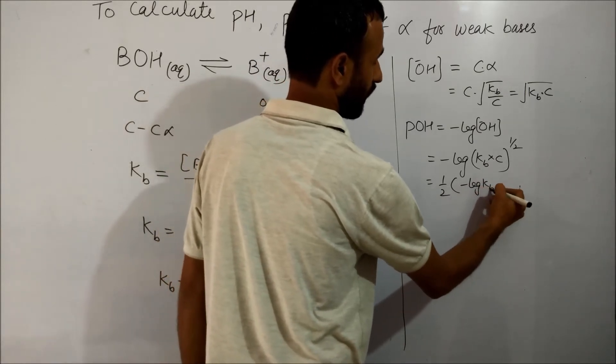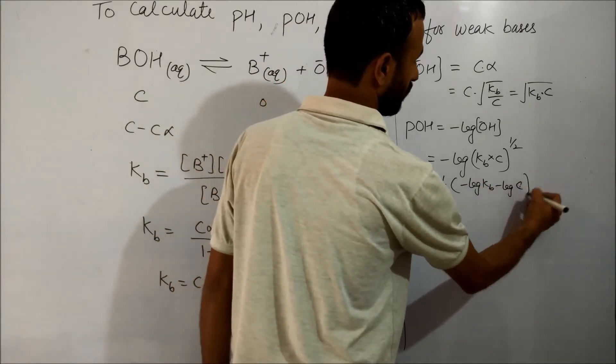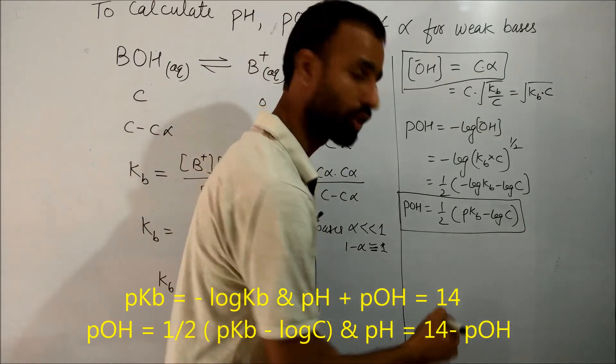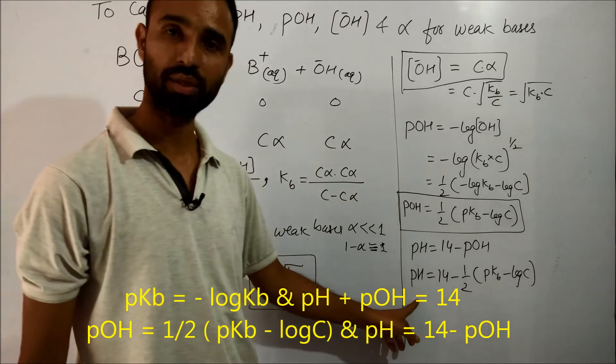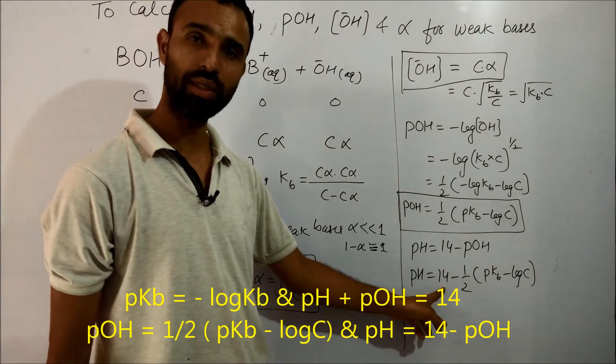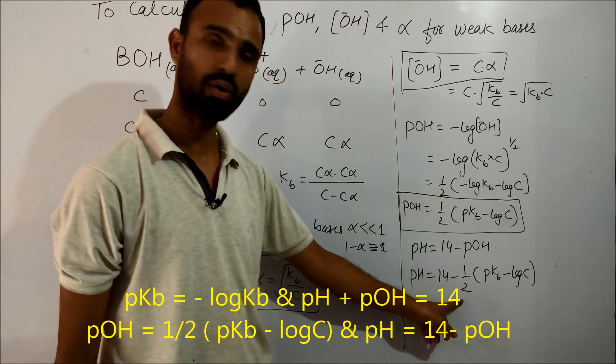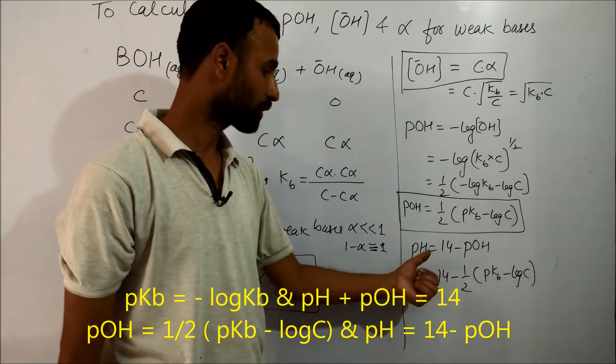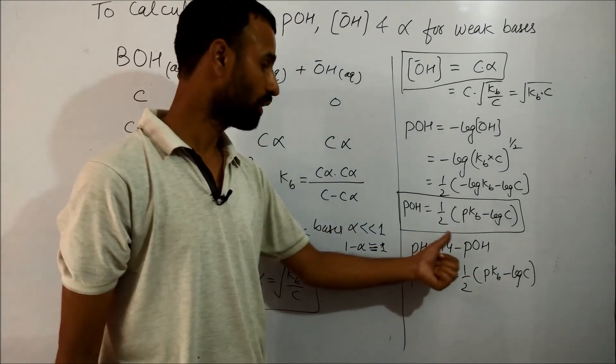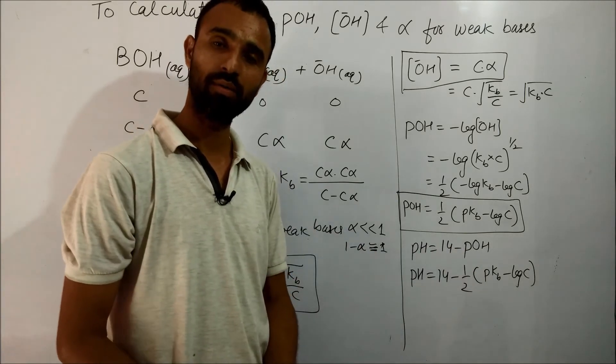It is minus log of KB minus log of C. You know that pH is equal to 14 minus half of KB minus log of C, because pH equals 14 minus pOH.